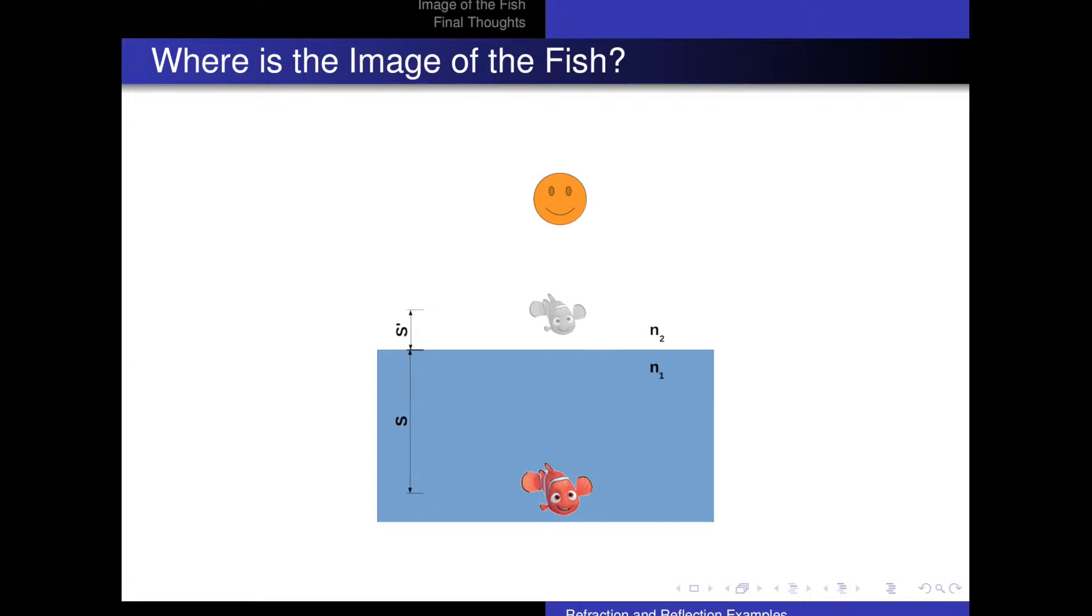You are looking down into some pond and you see some orange fish. Now the orange fish is actually a distance s below the surface of the pond, but the image of the fish is not necessarily going to be a distance s away. It's going to be some distance s prime either above or below the surface of the pond. We don't know. And I'm going to label the indices of refraction n2 and n1.